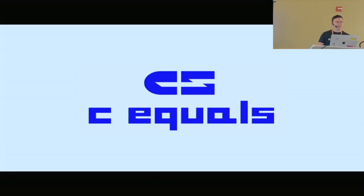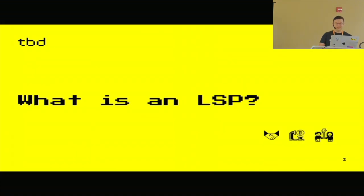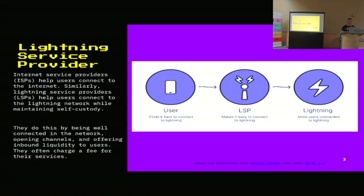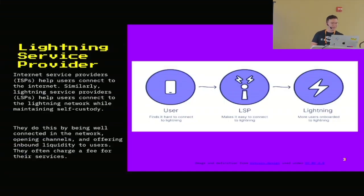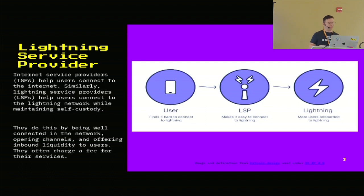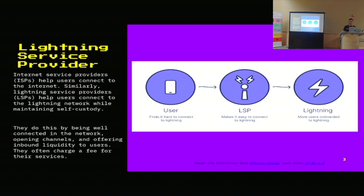The first question I get whenever I talk about LSPs is: what is an LSP? I have a little slide here from the Bitcoin Design Guide that gives a pretty good explanation. An LSP is a Lightning Service Provider — kind of like an ISP. It helps people get connected to Lightning by being well connected to the network, opening channels, and offering inbound liquidity to users. They often charge a fee for their services.